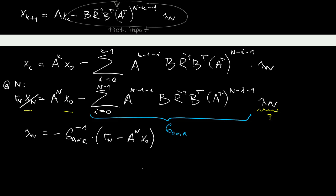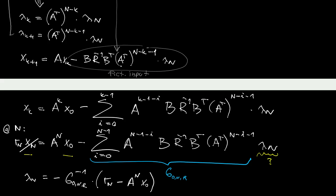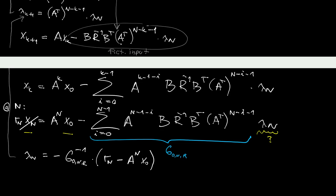Now, similarly as we did before, having lambda at the end of the interval, we can determine lambda anywhere inside of the interval. And in particular, we need to have lambda_k plus 1. So let's now write it down. Lambda at k plus 1 looks like this.